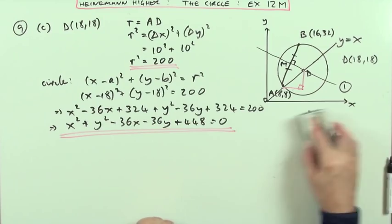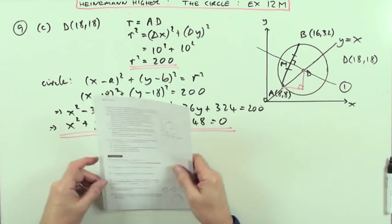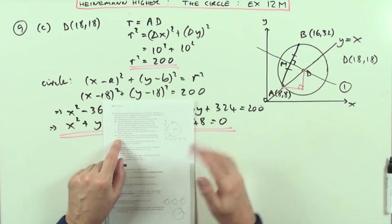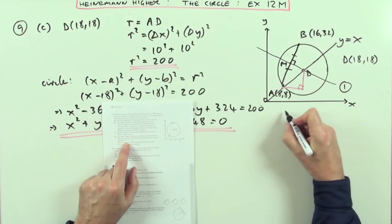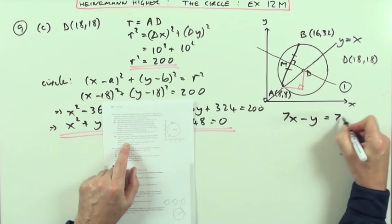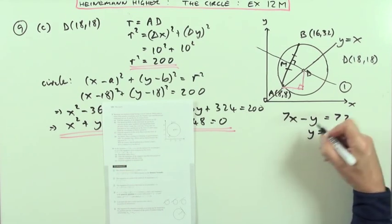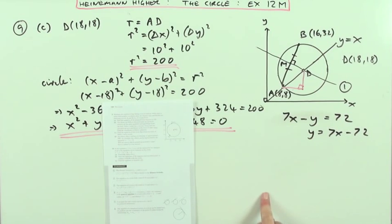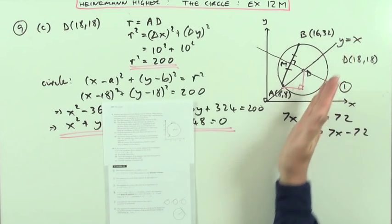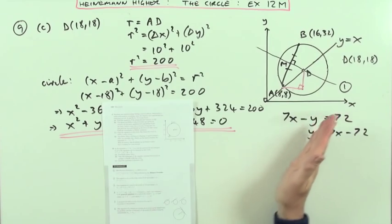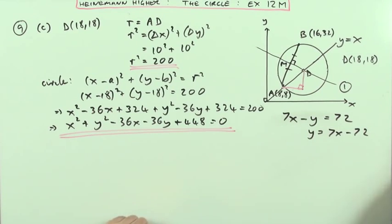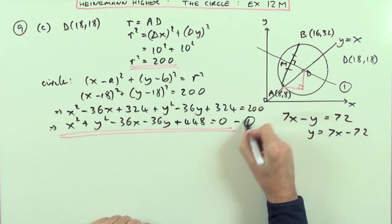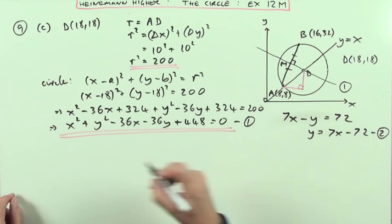Now the last part says an enemy ship is sailing on a bearing of approximately 8 degrees, so it's almost heading north, just slightly east of north, following this equation: 7x - y = 72. Well, that's y = 7x - 72. So if you go 72 down and follow a gradient of 7, it's something like this. So the question is: if it's following this path, is it going to go within the radar scope or not?